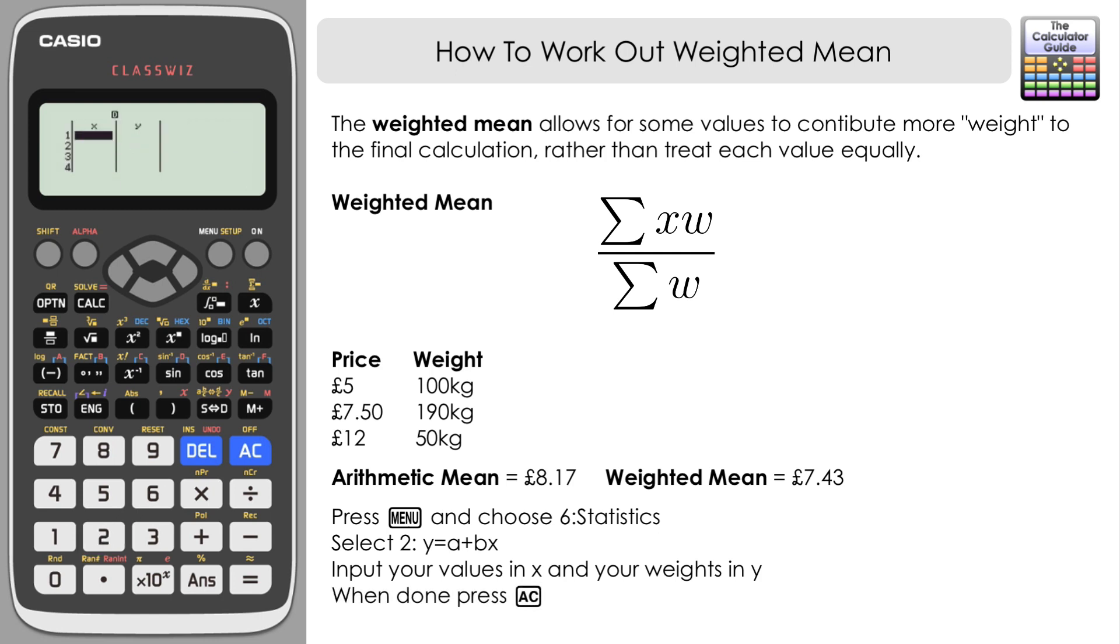We're going to put our values, our x values, our prices in this case, in the x column. And what we're going to do is we're going to substitute the w for a y. So we're really saying y is the weight that we've got. Simply your calculator operates in x and y so it doesn't have that w feature, so we're just going to have to act as if that's w.